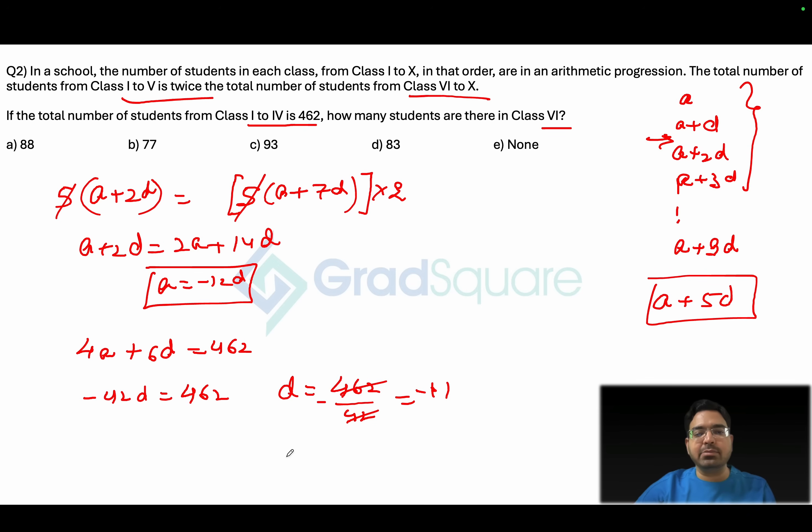If minus 11 turns out to be the common difference, the first term will turn out to be minus 12 times minus 11, that's going to be positive 132. And a plus 5d is what you are looking at. So a is 132 plus 5 times the common difference which is minus 11. If you look at this, this sum will turn out to be 77. Option B, 77 will be the correct answer for this.